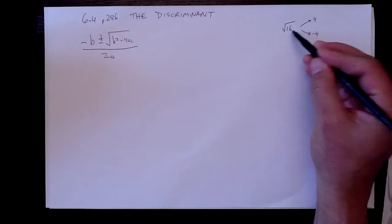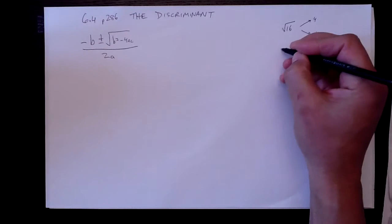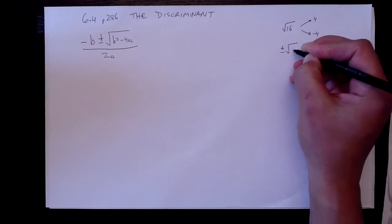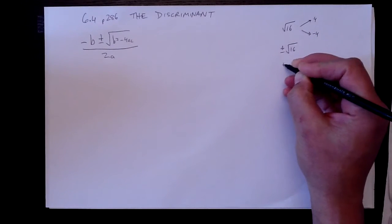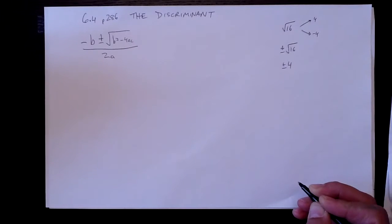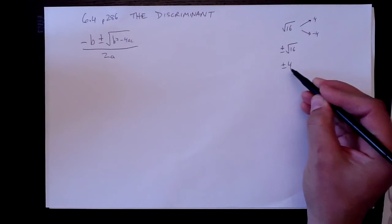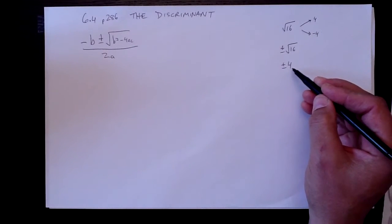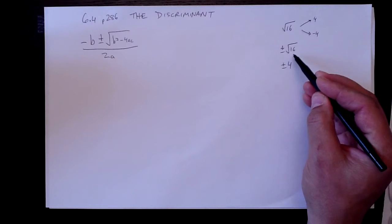So when you have a positive number and it's square rooted, there are two roots. And that's why we sometimes like to say plus or minus root 16 and say plus or minus 4 as the answer, just to remind us that there are those two examples of roots that will result in 16.